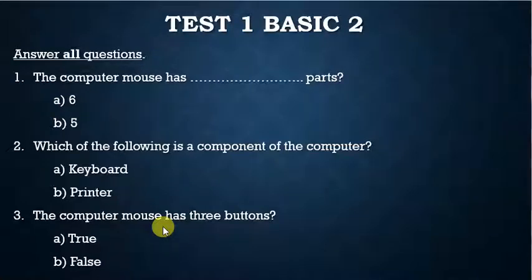Now let's look at the questions. The first question is: the computer mouse has dash parts. We have six and five, so you select the correct answer.